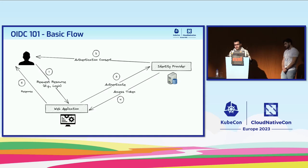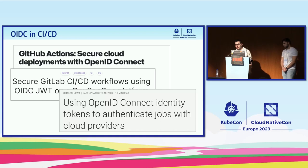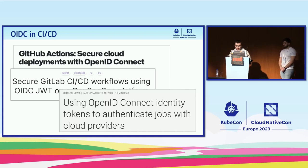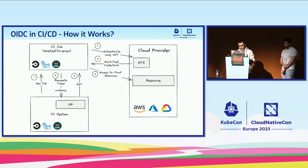Let's see how OIDC can be used in web authentication. Say I want to consume some resource on a web application and I click the 'Login with Google' button. It forwards me to Google's identity provider, which raises an authentication consent window asking whether I'm authorizing this application to use my identity. When I accept, Google issues a new JWT token signed by them containing my identity. This is passed to the web application, which uses it to understand who I am and grant me proper permissions.